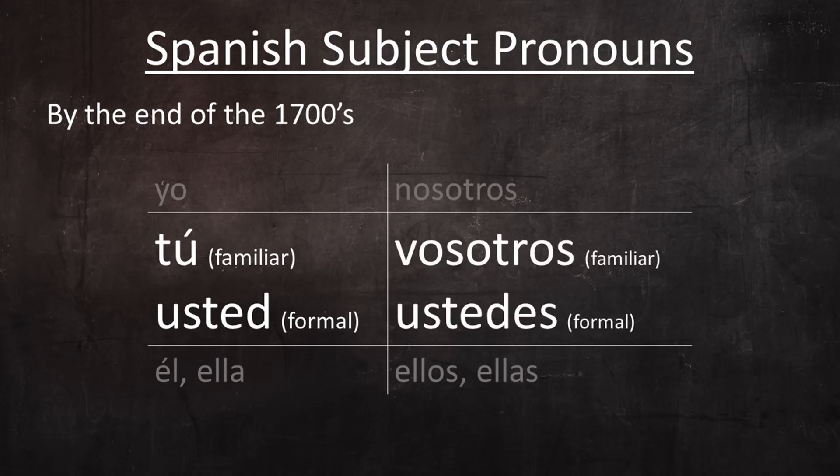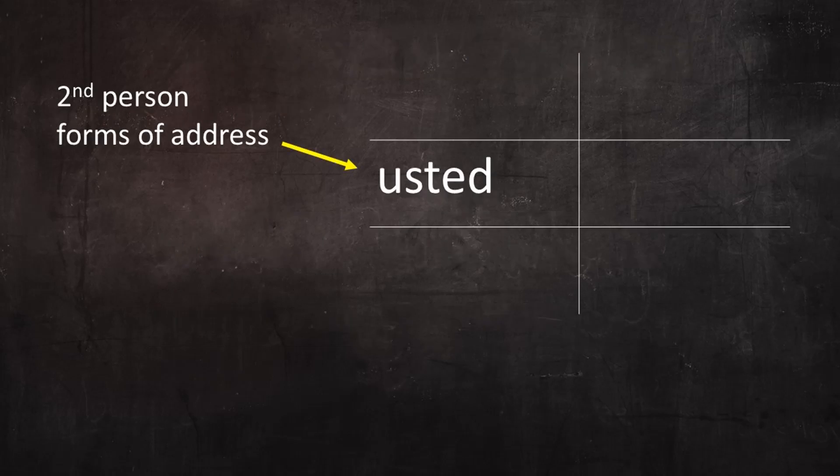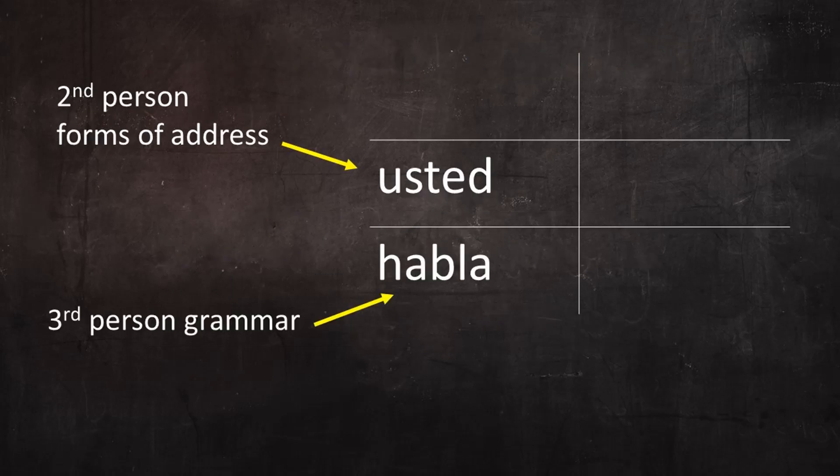Similarly, in the plural vosotros was the friendly, informal form, and ustedes was the polite, formal form. And as explained, although usted and ustedes are second-person forms of address, they employ third-person grammar elements.